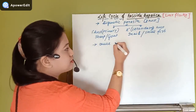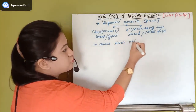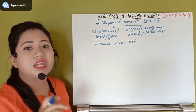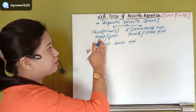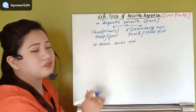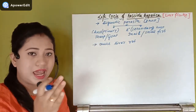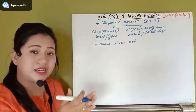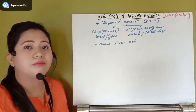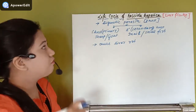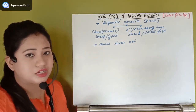Fasciola hepatica causes the condition known as liver rot in the primary host. In the body of the sheep or goat, it attaches to the liver and takes nourishment from it.